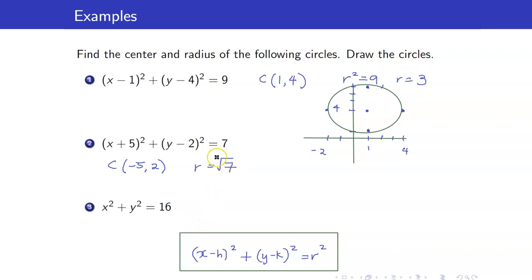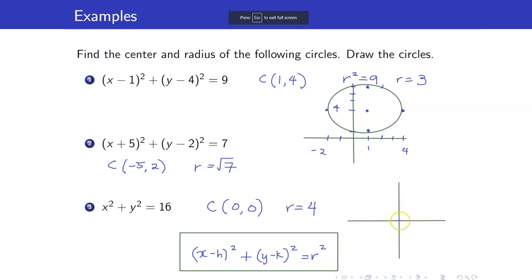I will no longer draw these circles. Lastly, X squared plus Y squared equals 16. Our center is at (0, 0). Our R squared is 16, which means R equals 4. Since our center is at (0, 0) with radius 4, we plot the four key points and connect them by a circle.